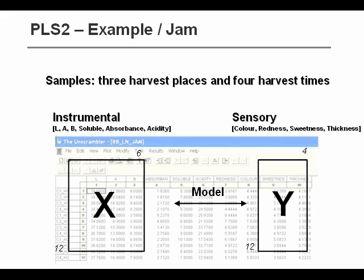And those cheaper measurements are given here as six instrumental measurements, some color measurements L, A, and B, and three additional measurements. So we want to build a model that can predict the sensory data from the instrumental data. And we have 12 samples that are made so as to span the normal variation. They come from different harvest places and from different harvesters.